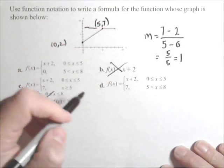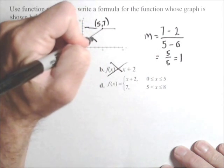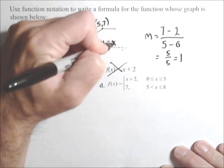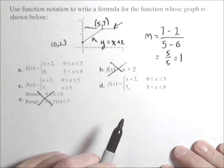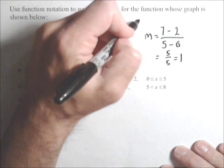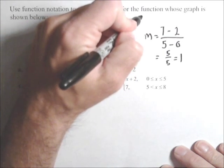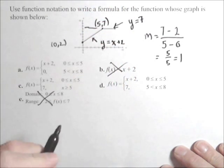So the linear piece is going to be, this piece here is modeled by y equals x plus 2. This piece here, notice it's horizontal at 7, so it's going to be modeled by y equals 7, so it's just a constant function.